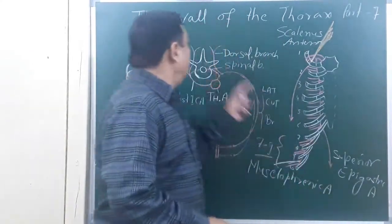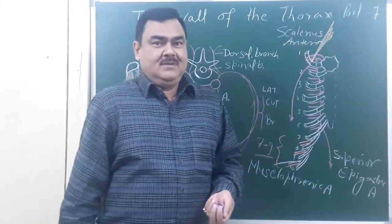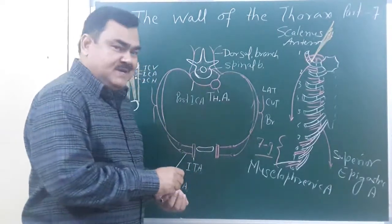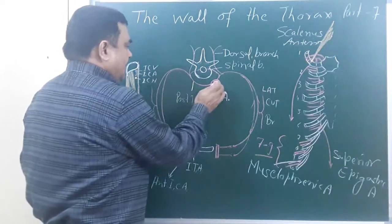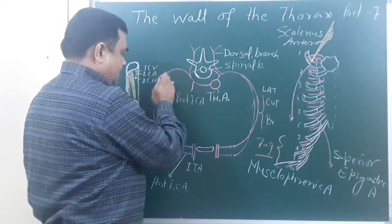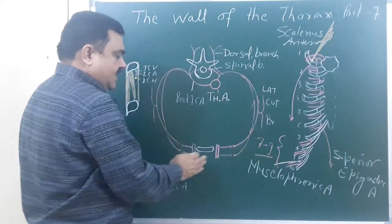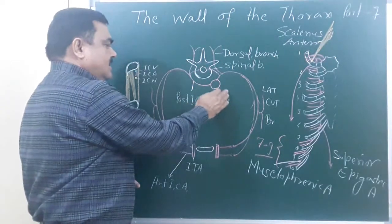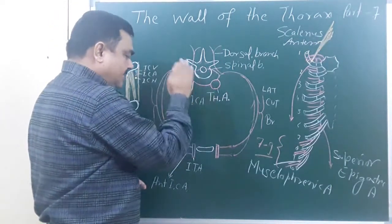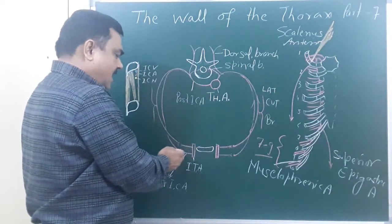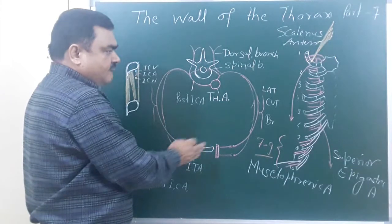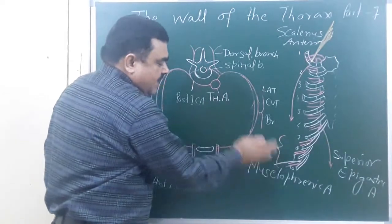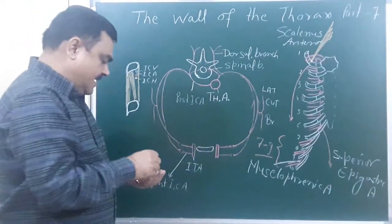Now we will discuss the wall of thorax, part 7. In previous lectures you have seen the intercostal spaces are supplied by the posterior intercostal artery and the anterior intercostal artery. These arteries arise from the thoracic aorta in the 3rd to 11th spaces. The anterior intercostal artery arises from the 1st to 6th space from the internal thoracic artery, and from the 7th to 9th space from the musculophrenic artery.